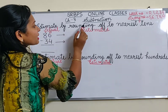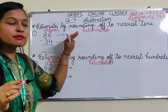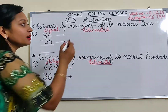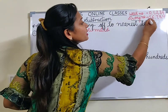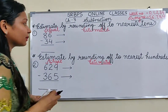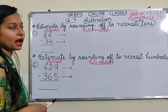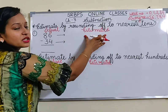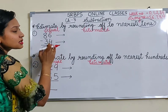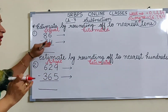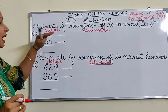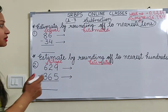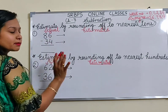Estimate by rounding off to nearest tens. Estimate means we need to find an idea about this number and we have to round off to the nearest ten number, then subtract it also. First we will do actual subtraction, then estimated subtraction. When we change any number without rounding, that is actual subtraction, and when we round off and then subtract, that is estimated subtraction.